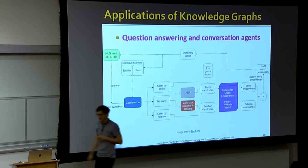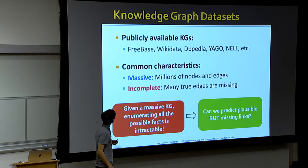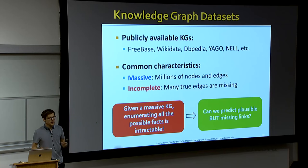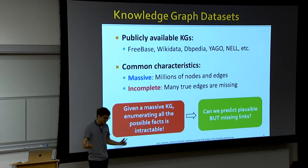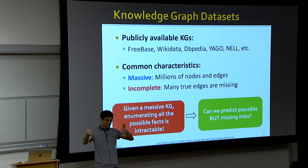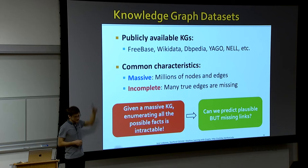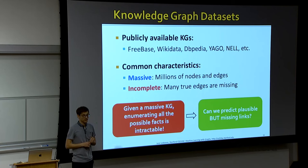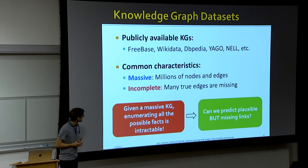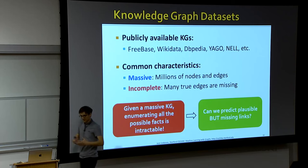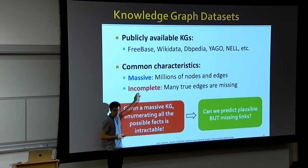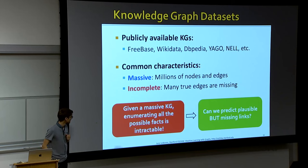If you think about general knowledge graphs, Freebase, Wikidata, and DBpedia are examples. You can take all of Wikipedia and represent it as a graph of nodes, their properties, and relations between them. Freebase was a project Google acquired — I think the price was in the billions. What is common to these things is that they are massive — millions of nodes, millions of different edges and relations — and they are really incomplete, in the sense that knowledge has not been completely mapped.